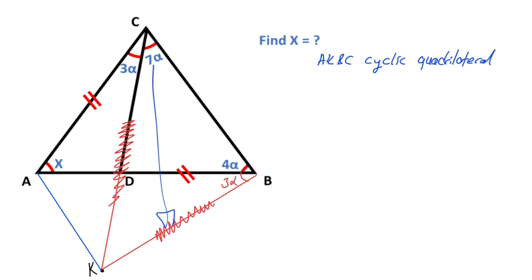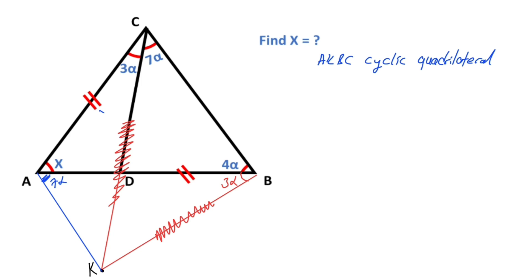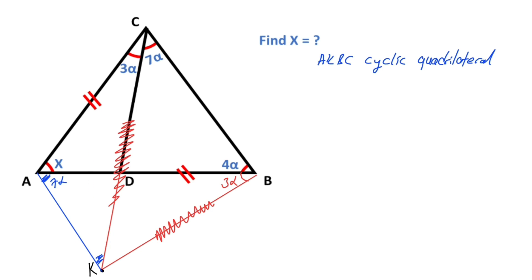And then, if there is a 7 alpha opposite of this length, the opposite of this length must be equal — here, 7 alpha — because of the cyclic quadrilateral. Likewise, if there is a 4 alpha opposite of this side, the opposite of this side must be equal to 4 alpha.